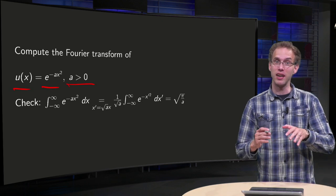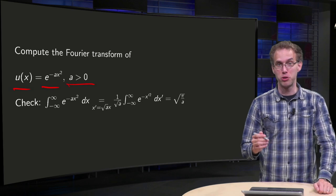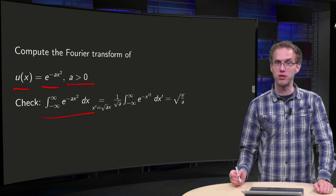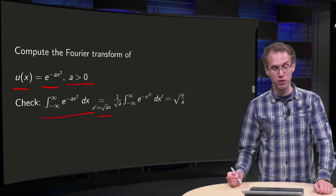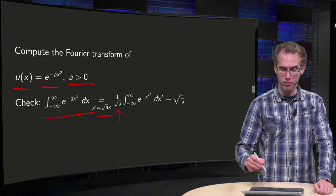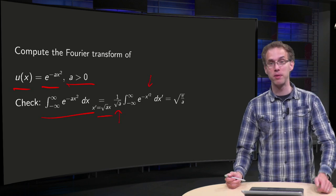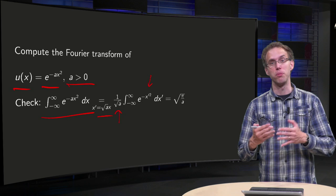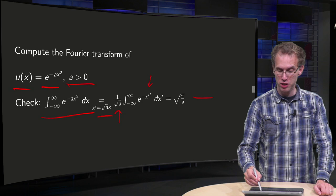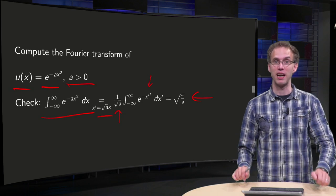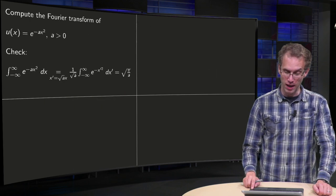Let's check whether the integral from minus infinity to infinity of |u| is finite. Well, |u| is the same as u, so if we integrate this, we know how to do this. You can use the substitution rule: x' = √a · x, you get a 1/√a factor, and the integral of e^(-x'²) dx', which from standard calculus — for example using polar coordinates — equals √π. So you get √(π/a), which is finite. So we can compute the Fourier transform of this function, in principle.